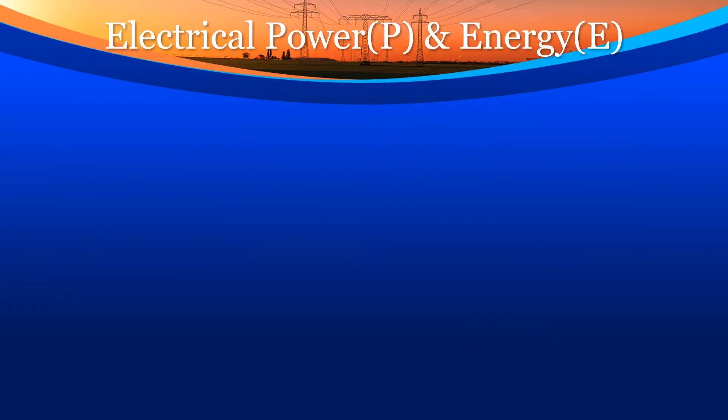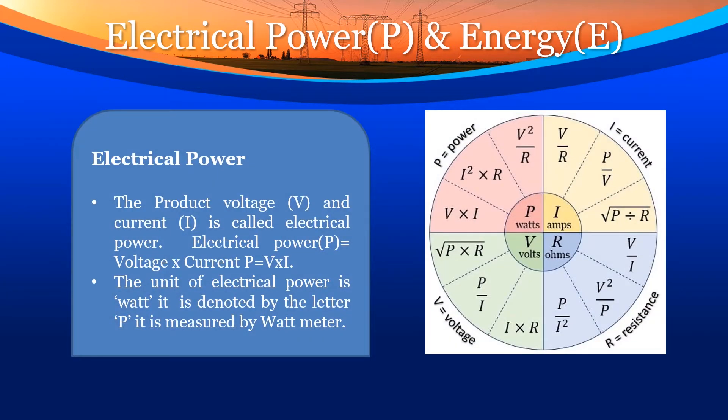Electrical power, p. The product of voltage V and current i is called electrical power. Electrical power p is equal to voltage into current, i.e. p is equal to V into i. The unit of electrical power is watt. It is denoted by the letter p and is measured by a wattmeter.